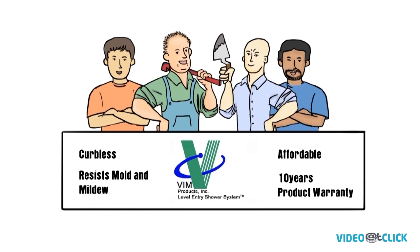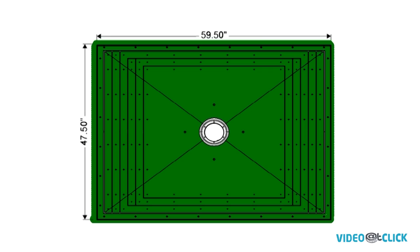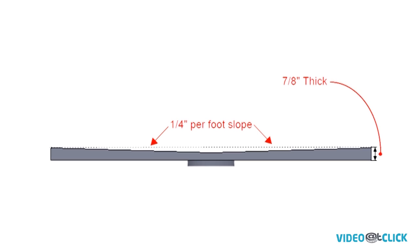There's just a few more things you should know before we begin. The first is that the Vim Level Entry Shower Pan measures roughly 5 feet by 4 feet and utilizes a center drain location. It's ultra-thin at only 7 eighths of an inch thick and comes pre-sloped at a quarter inch per foot.